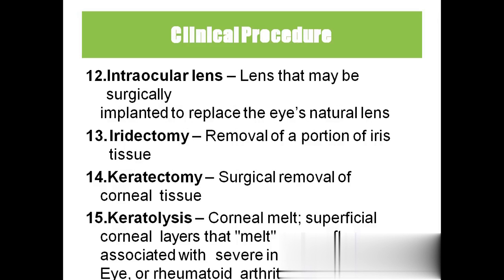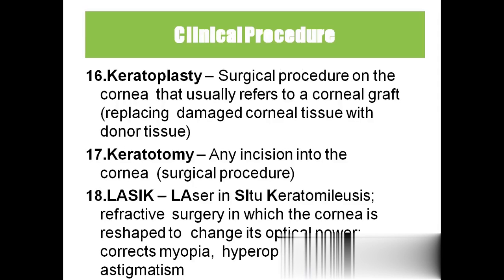Intraocular lens is a lens surgically implanted to replace the eye's natural lens, usually done in cataract surgery — they remove the natural lens and put in an artificial one. Iridectomy is surgically removing a portion of the iris muscle. Keratectomy is surgically removing corneal tissue. Keratolysis, also called corneal melt, is caused by severe inflammation of the eyeball. Keratoplasty is surgical repair of the cornea. Keratotomy is an incision into the cornea — any cut on the cornea is called keratotomy, done when surgery requires cutting the cornea.